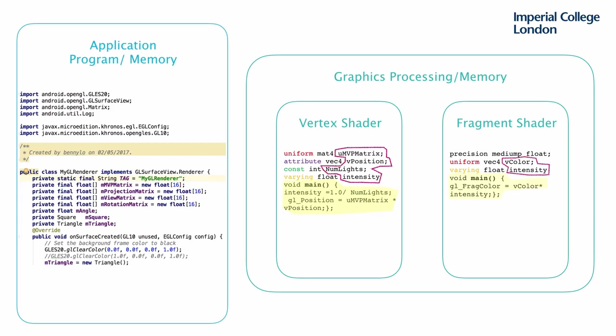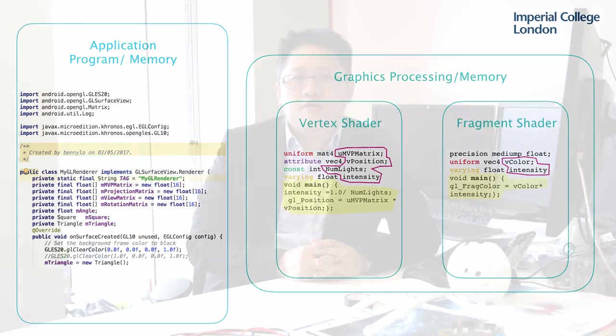The shading language supports standard data types like int for integer and float for floating point. However, unlike conventional C programming syntax, we have to define qualifiers like uniform, attribute, varying, etc. for each variable. Let's look into the data types first, and then I'll explain what these qualifiers mean.